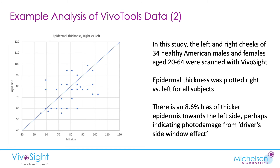Here is another example where we scanned the left and right cheeks of 34 healthy American males and females over a variety of ages, and plotted thickness on the left side versus the right side. There are more points below the midline than above, telling us there's a bias of thicker epidermis on the left side compared to the right. That may well be due to the so-called driver's side window effect — Americans drive on the left where they get more sun exposure — which can result in a thicker, more roughened epidermis. We can only speculate, but I think it's plausible.